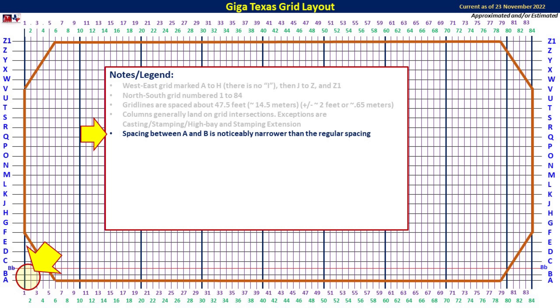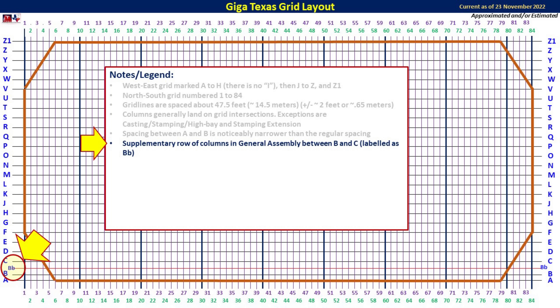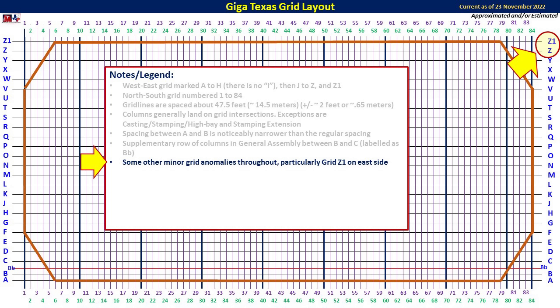There are some discontinuities in how the grid is laid out. Specifically, A and B are actually much narrower and closer together than the regular spacing. To make up for this discontinuity, they added a supplementary row of columns in the general assembly area listed as BB, between grid lines B and C. Another area of discontinuity is grid Z1 on the east side, which seems to have been installed in the southern stamping machine structure area but is not present in the north end at the casting machine structure.